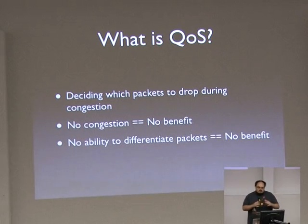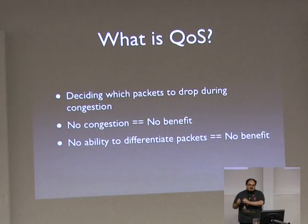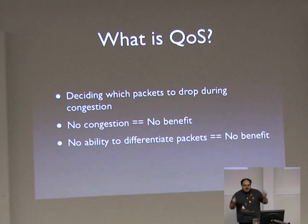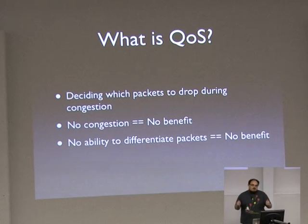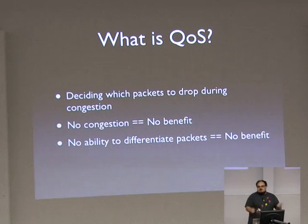There's another thing that people link in with this, which is various rate limiting and assigning certain amounts of bandwidth. Ultimately all you're doing is causing congestion earlier. You may wish to do this — there are valid reasons to do it. And of course the reason QoS doesn't work on the internet as the wider global network is simply because you can't differentiate packets. This also gets into the whole fun with network neutrality.